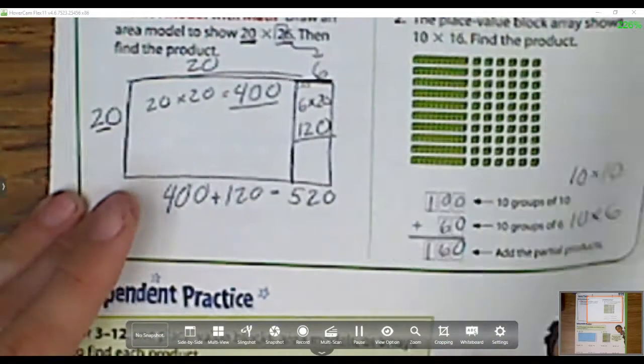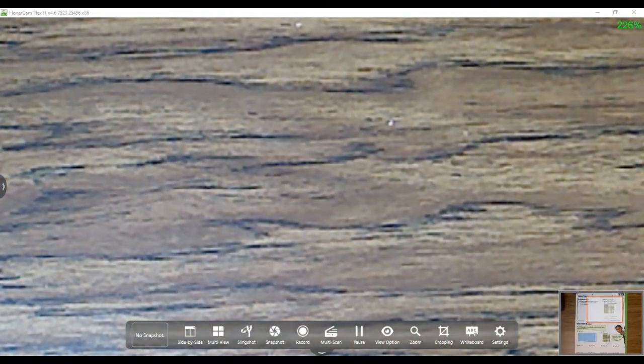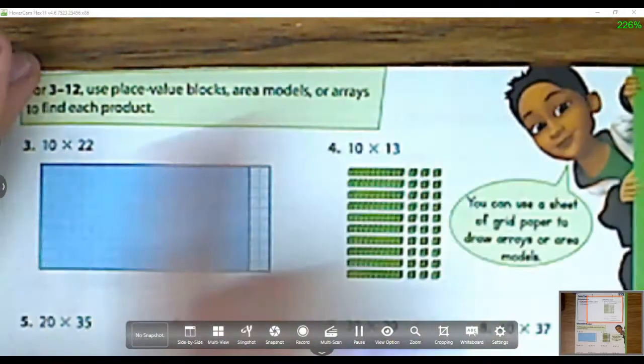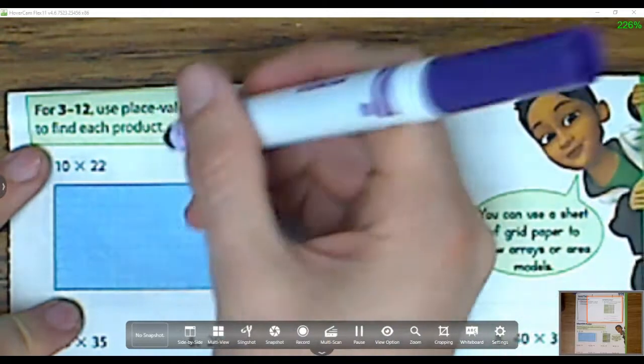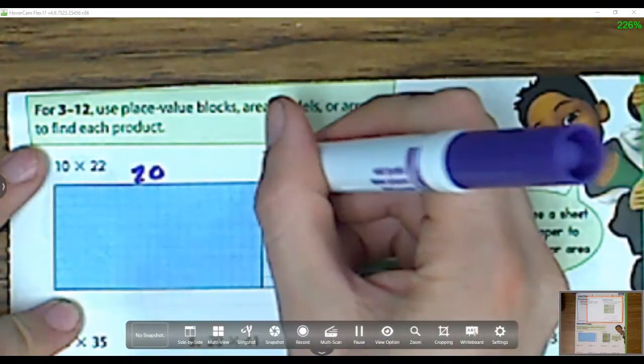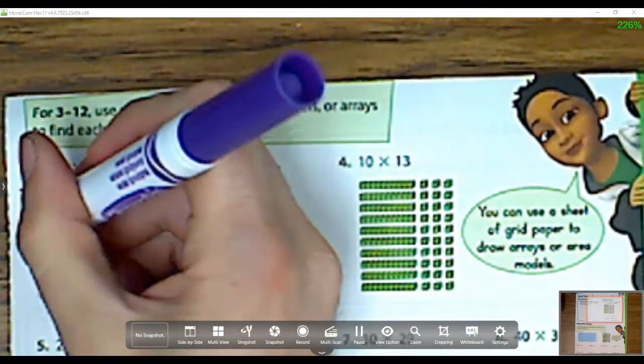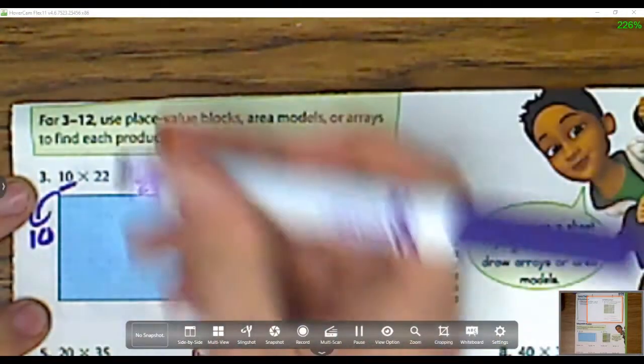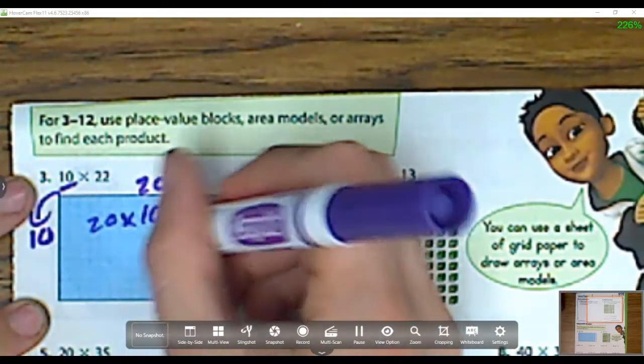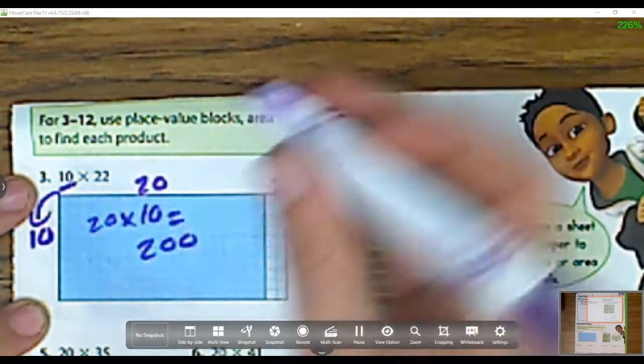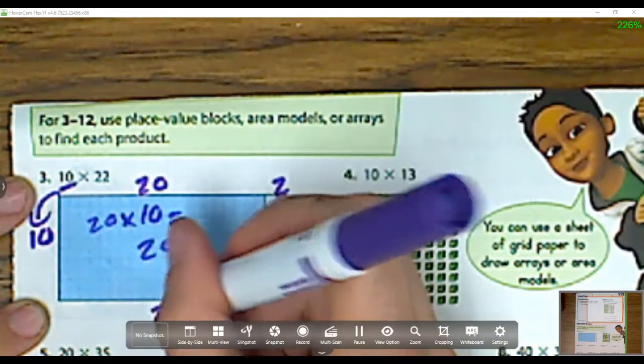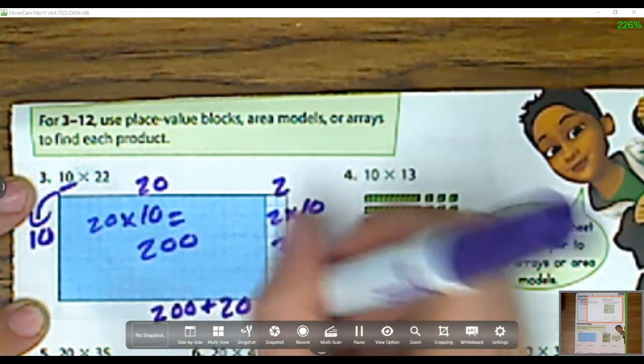Let's head on to our next part. It's saying use place value blocks, area models, or arrays to find each product. Let's start with this one right here first, 10 times 22. This is showing me that there's 20 up here and 2 right there, and on the side it has a side of 10. So now I just multiply. 20 times 10 equals 200, and 2 times 10 equals 20. And now I can just add those up, 200 plus 20 equals 220.